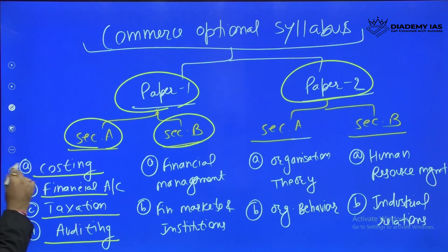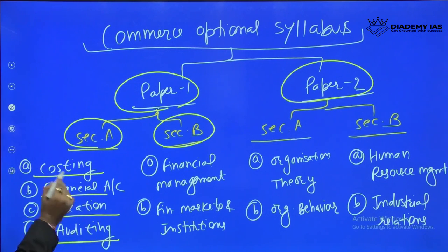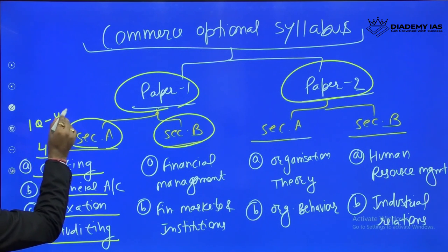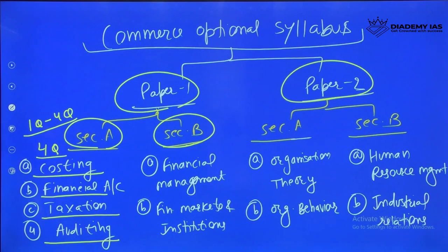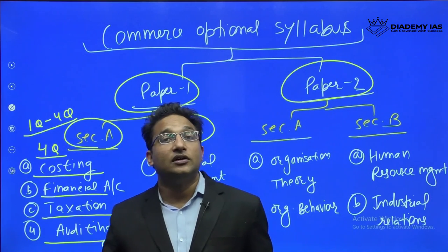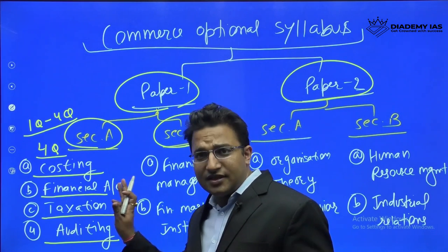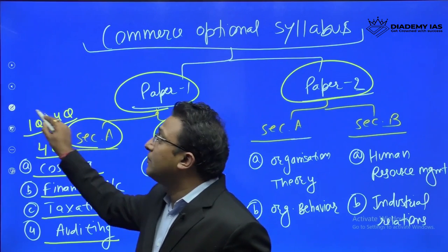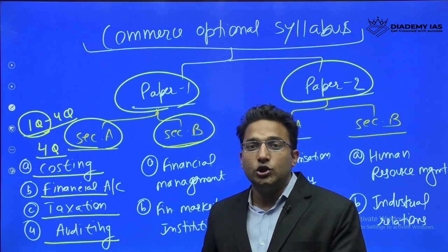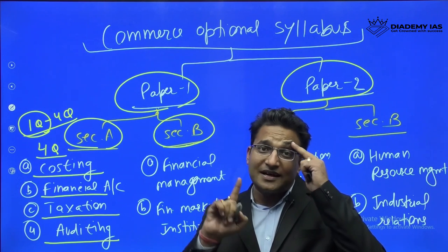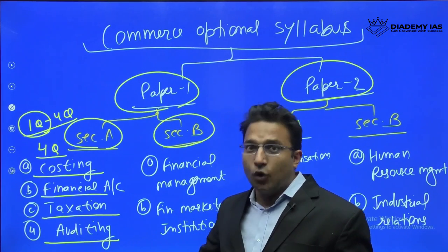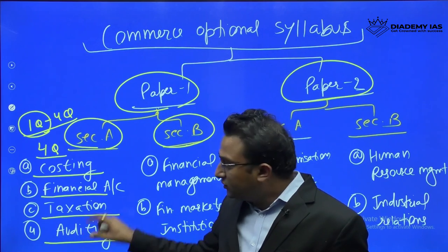All four subjects are there, and there are total four questions — Question 1 to Question 4. Out of these four questions you have to choose minimum two and maximum four questions. Question 1 is compulsory, and from Questions 2, 3, and 4 you have to choose minimum one and maximum two questions to be answered. So options are available in Section A.